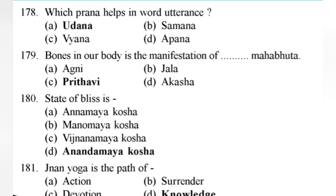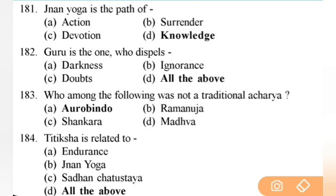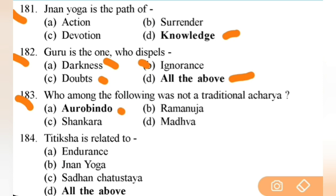State of bliss is — right answer is D — Anandamaya Kosha — important question. Next: Jnana Yoga is the path of — right answer is D — knowledge. Next: Guru is the one who dispels all of the above — darkness, ignorance, doubts — important. Next: who among the following was not a traditional Acharya? Right answer is Aurobindo. Next: Titiksha is related to all of the above — endurance, Jnana Yoga, Sadhan Chatushtaya.